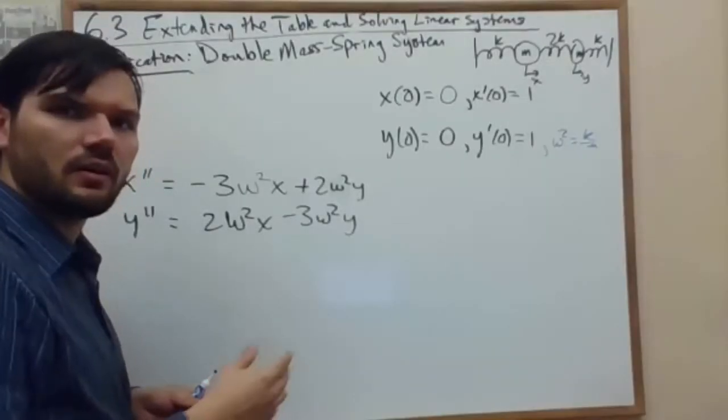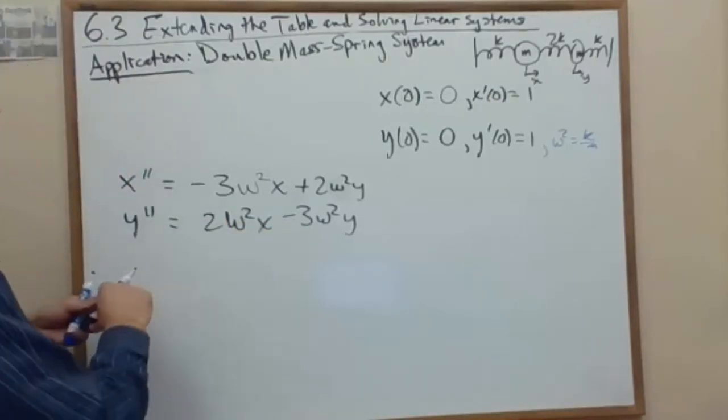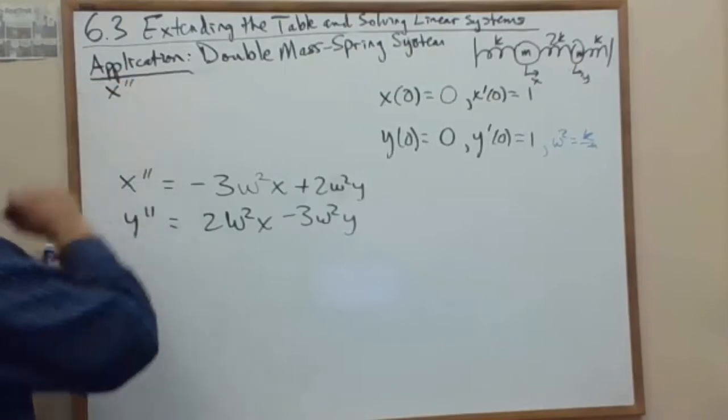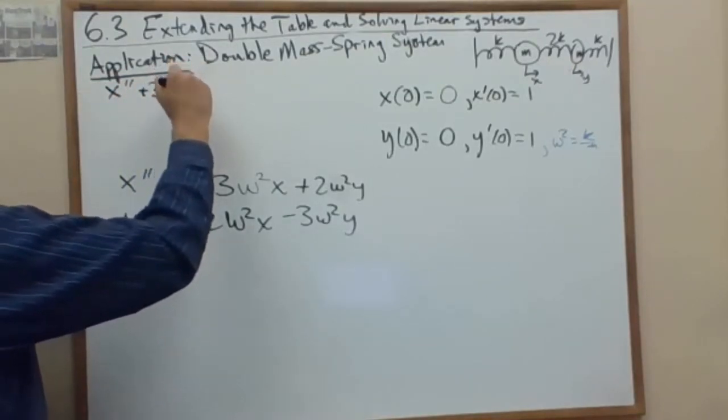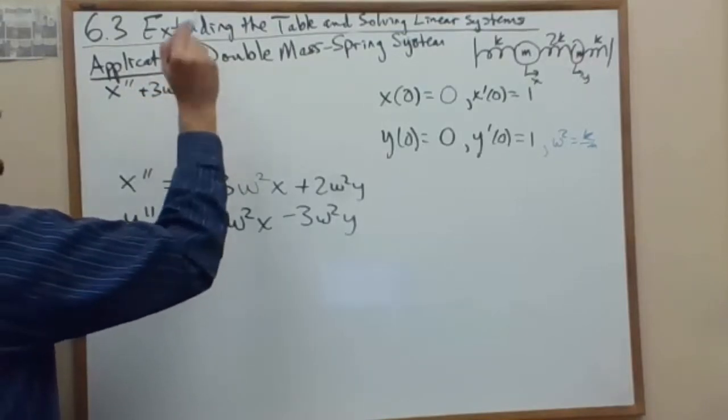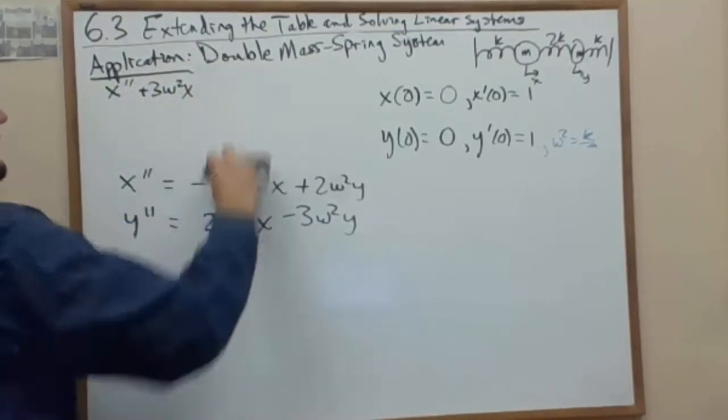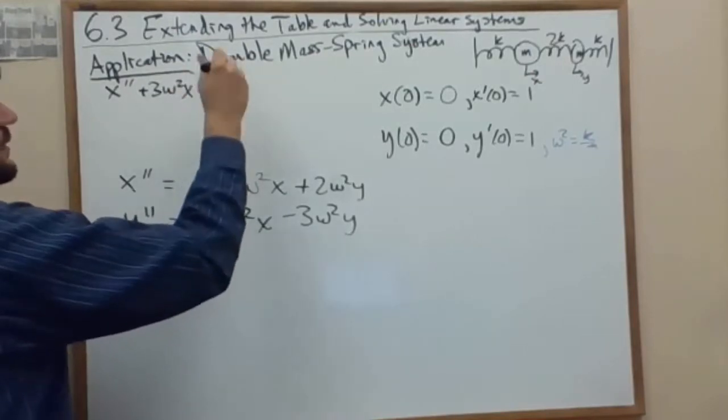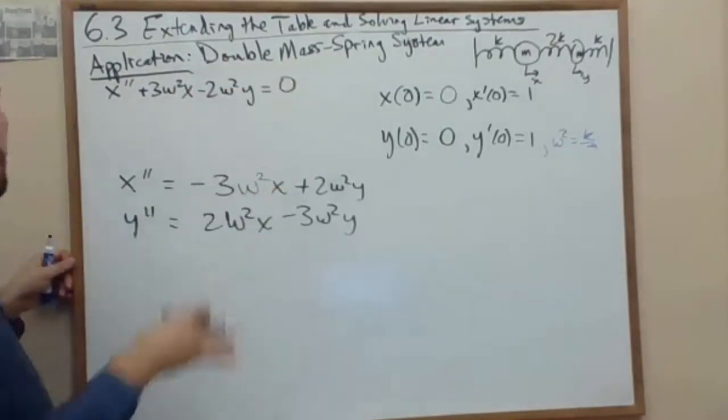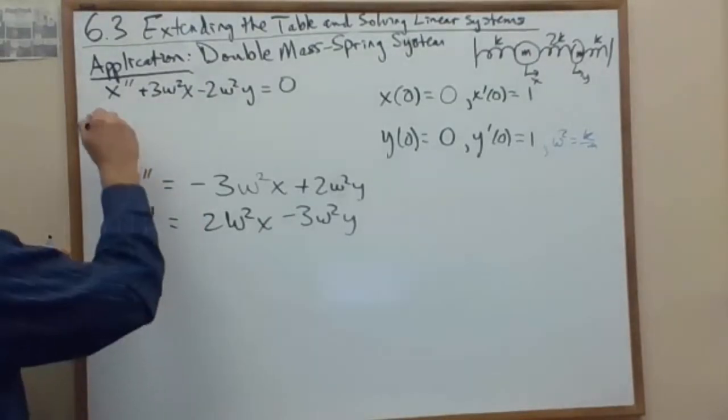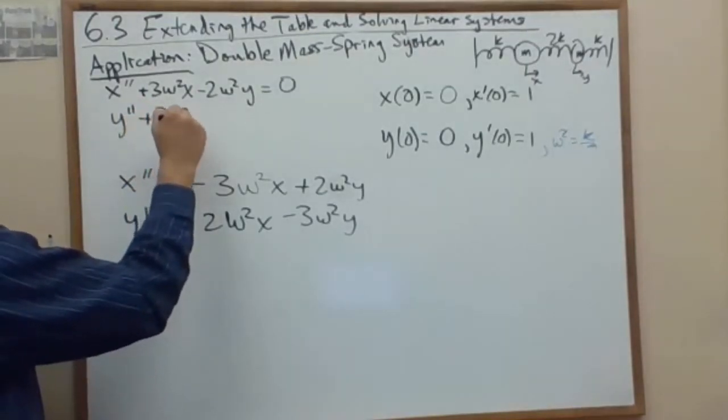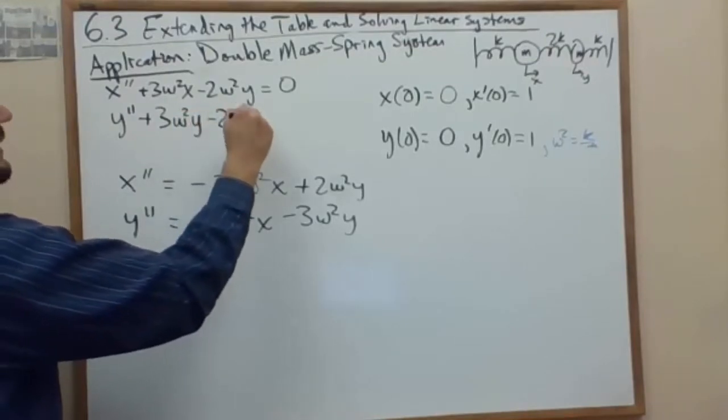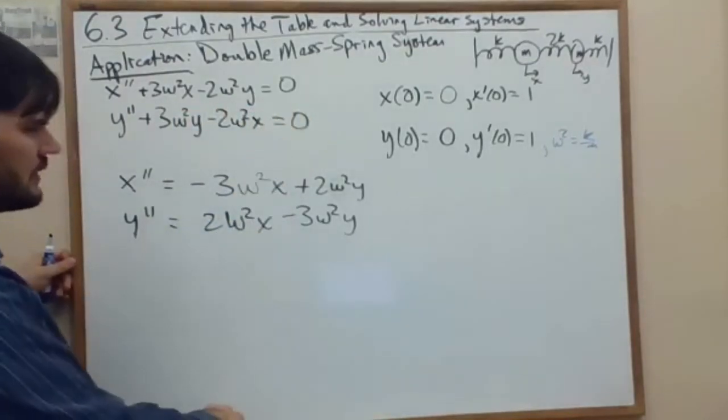Now grouping all the unknowns on the same side, this is our standard form. We would have x double prime plus 3 omega squared x minus 2 omega squared y equals 0, so a homogeneous equation there, that's nice. And then y double prime plus 3 omega squared y minus 2 omega squared x equals 0.